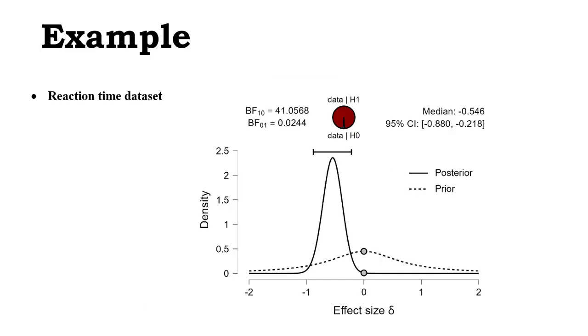And we've got the JASP output with the posterior and prior distribution over the effect size delta. As usual, the prior distribution is around zero, because it is the Cauchy distribution. And then we've got the posterior distribution that has a mean of minus 0.546, and a 95% confidence interval that goes from minus 0.880 to minus 0.218.